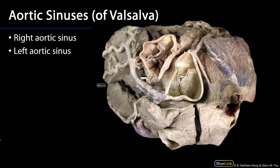The origins of the coronary arteries are the aortic sinuses. The aortic sinuses are the most inferior part of the root of the aorta, and they are the spaces above the right, left, and posterior (or non-coronary) cusps of the aortic valve. These sinuses fill up with blood during diastole; therefore, the coronary arteries fill with blood during diastole.